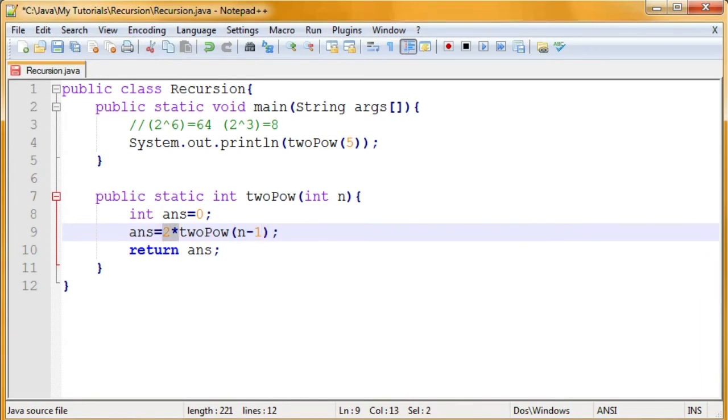this two basically takes out that one. So, in this case, we have five. So, it'll try and find two to the fifth by doing two times two to the fourth. Make sense? Alright. So, I'm going to compile it.